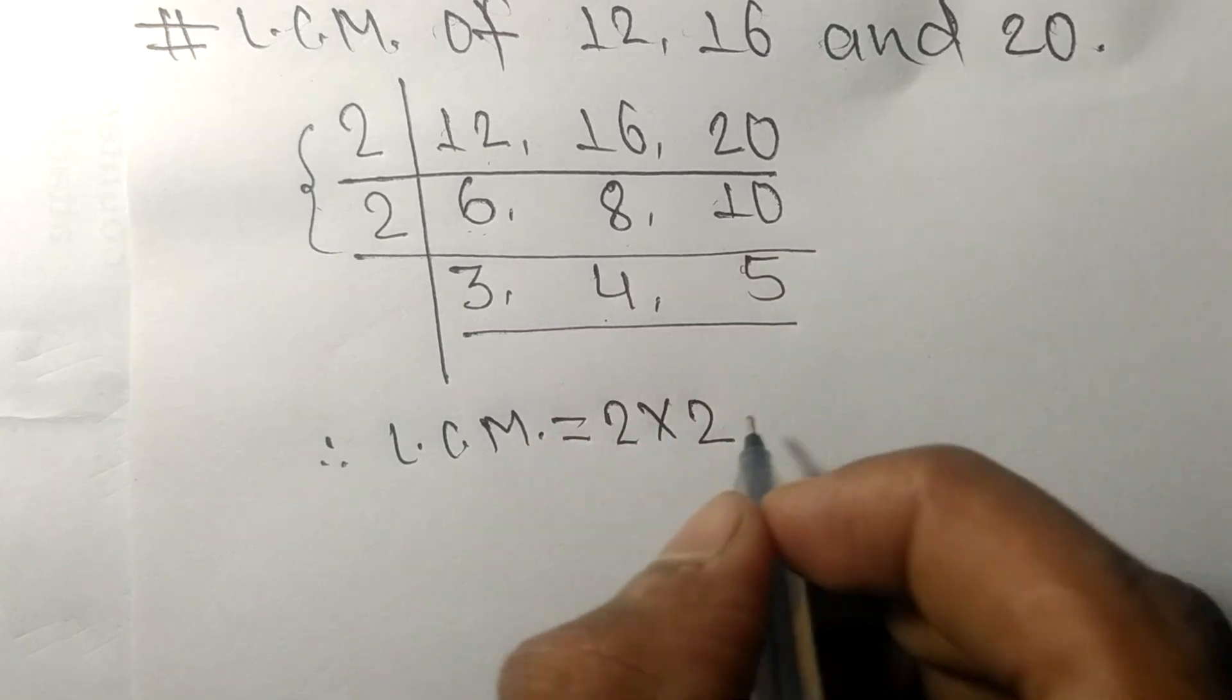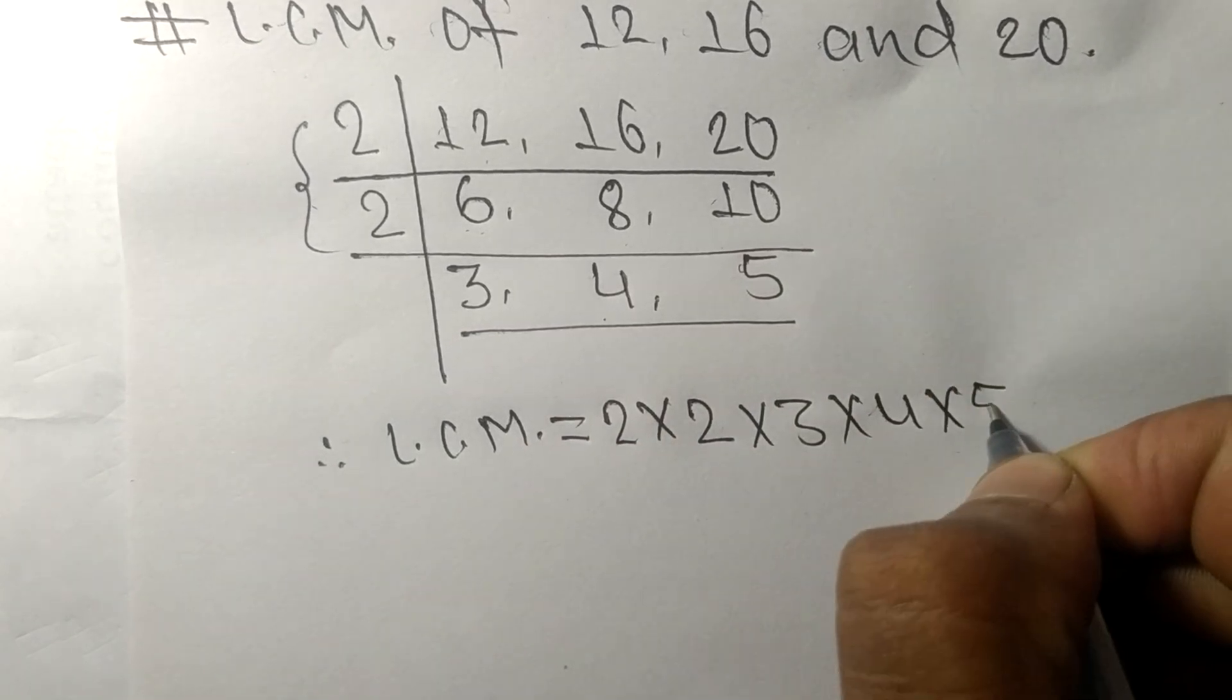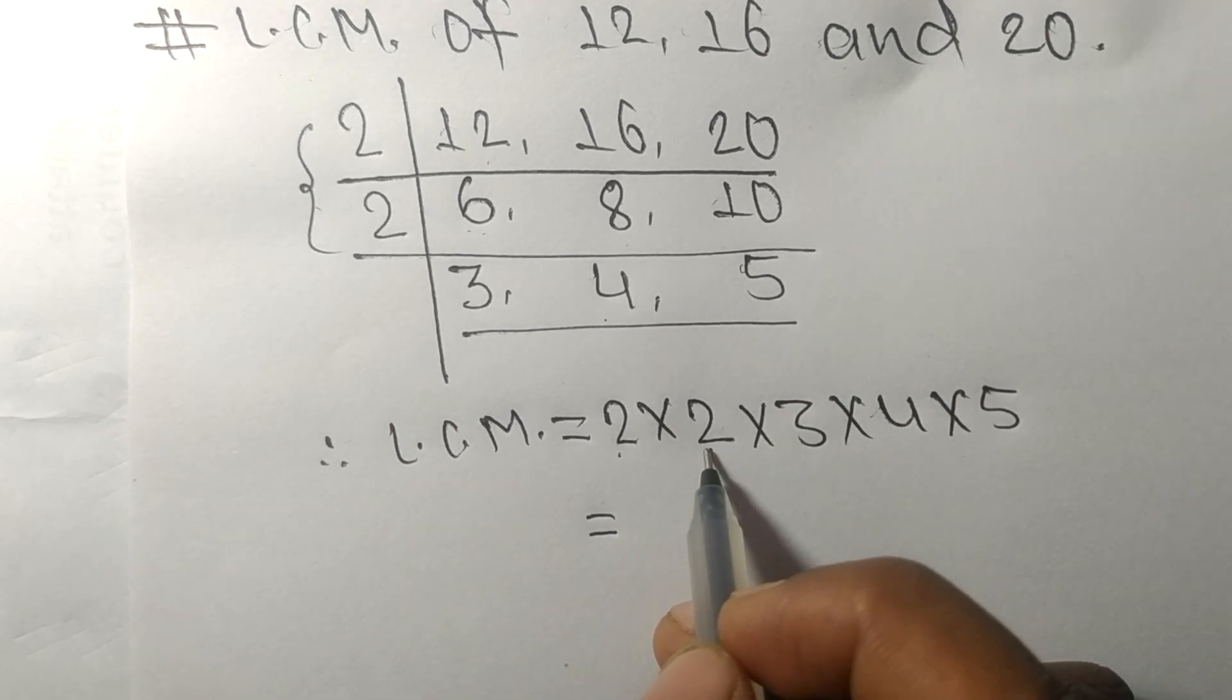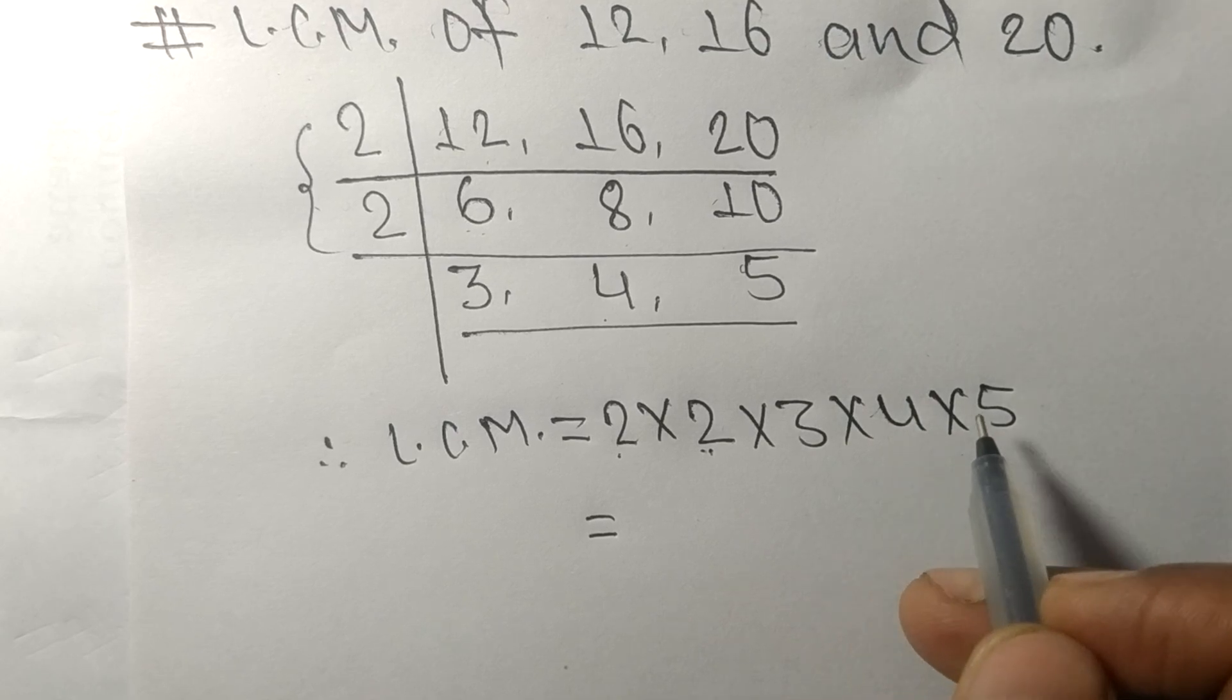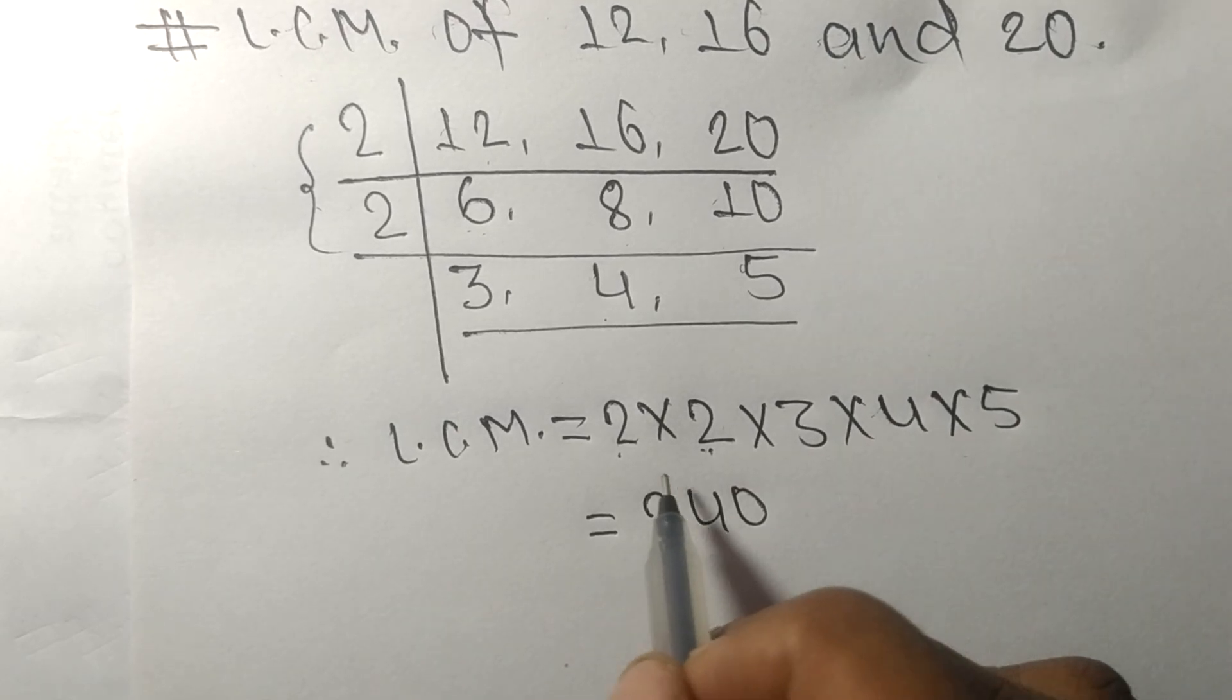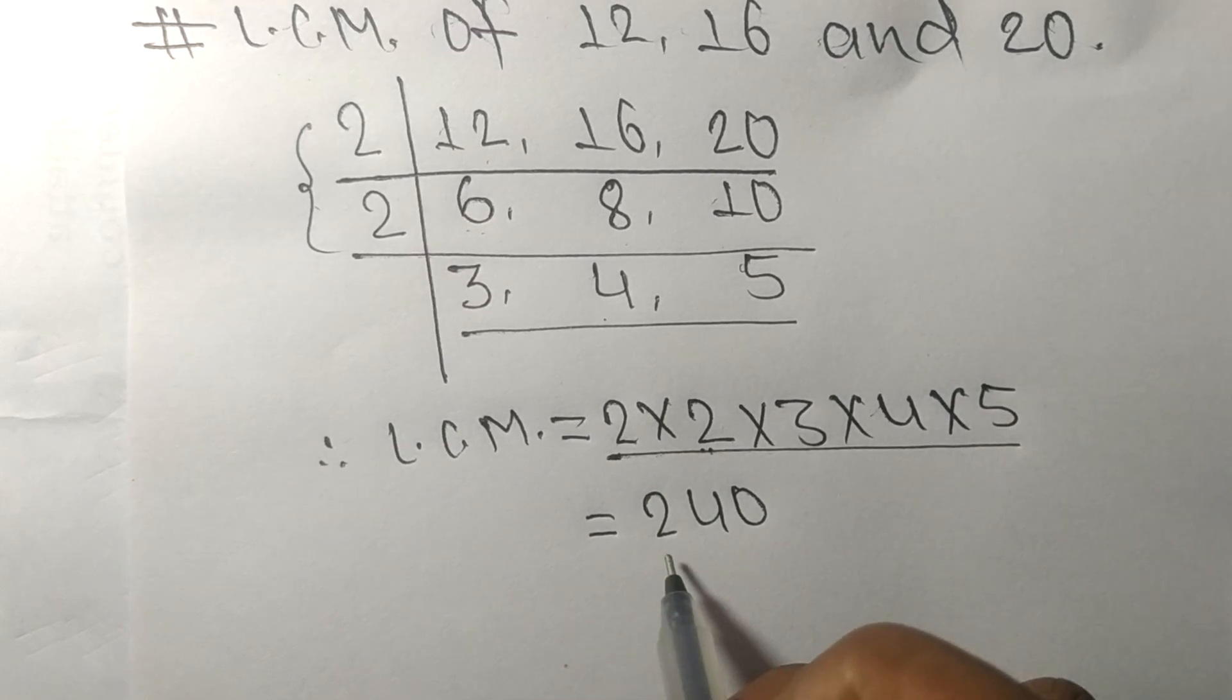2 times 2 means 4, 4 times 3 means 12, 12 times 4 means 48, 48 times 5 means 240. So by multiplying all these numbers we got 240.